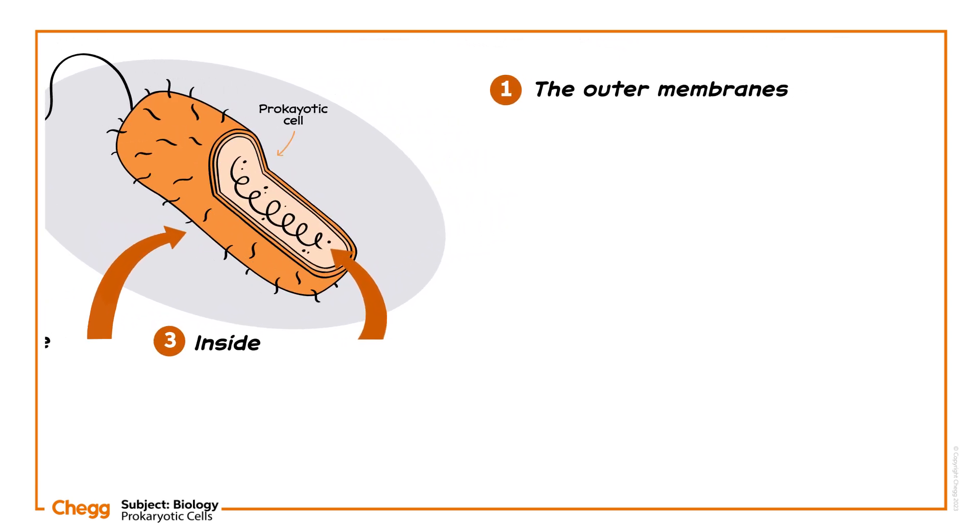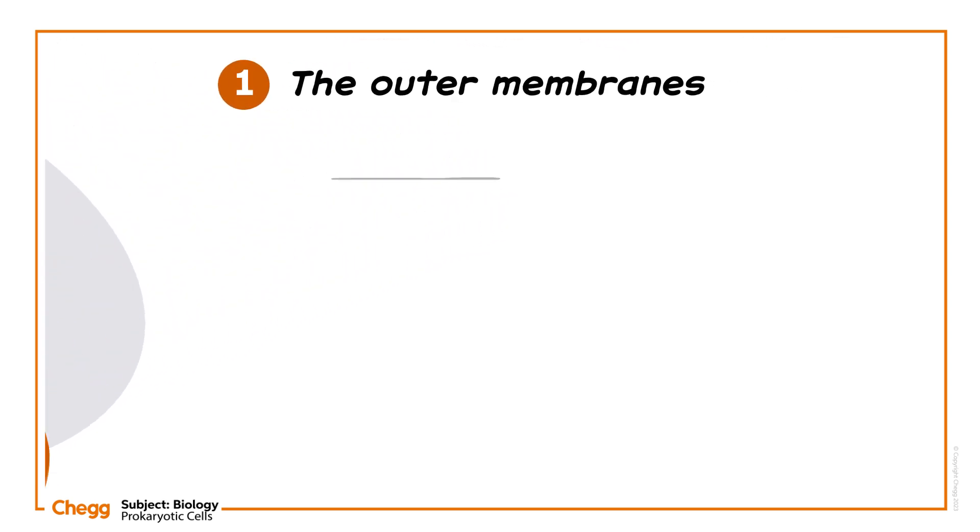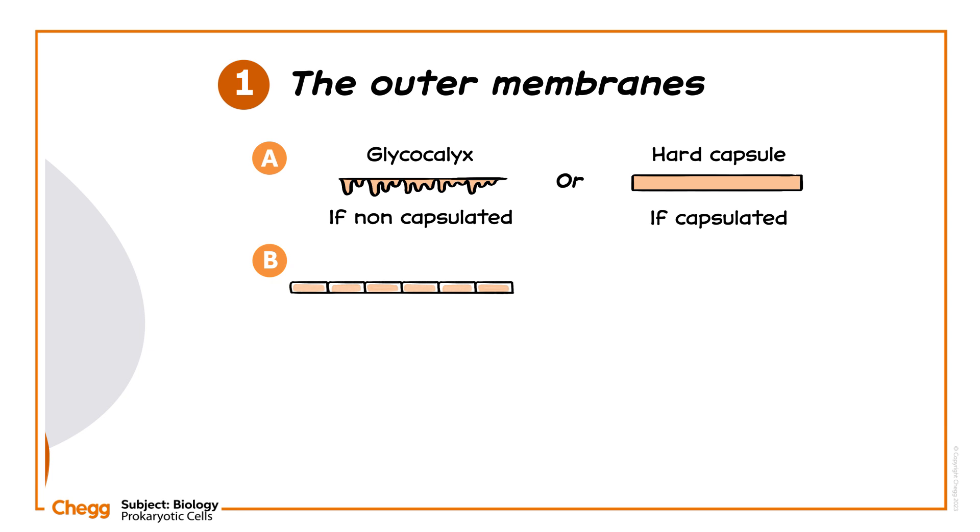Surrounding many prokaryotic cells outside the cell wall is a sticky slimy coating called the glycocalyx. Some others known as capsulated prokaryotes are surrounded by a thick, hard capsule. Underneath lies the cell wall, a rigid structure made of peptidoglycan or murane, and it gives the cell its shape.